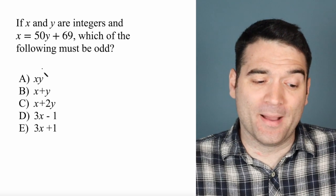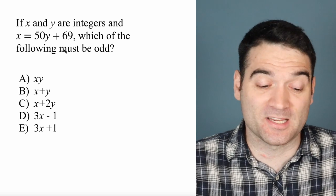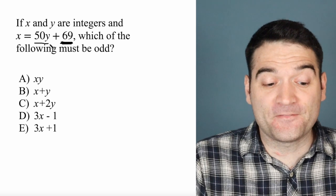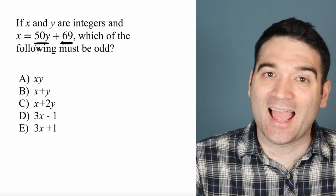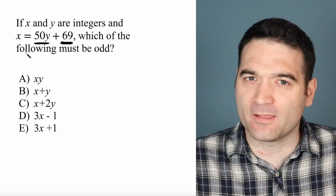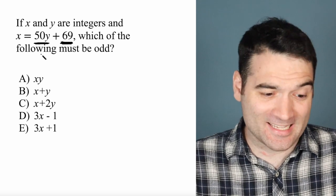What do we know about x? Well, we know that x is equal to 50 times y plus 69. 69 is an odd number, right? 50 times y has to be even. How do I know that? 50 times anything ends with a 0. And if a number ends with a 0, it's an even number.